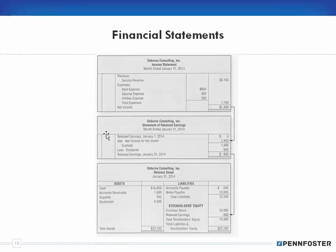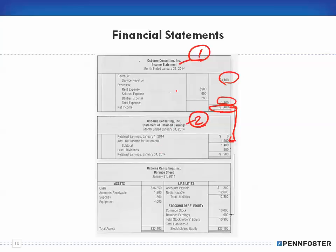The very first statement we have to create is the income statement, because revenues less expenses gives us our profit or loss. That profit or loss goes on our statement of retained earnings. So the first one you create is the income statement and the second is the statement of retained earnings, because you can't create the statement of retained earnings unless you have the net income. That information tells you the ending balance of your retained earnings account for that accounting period.